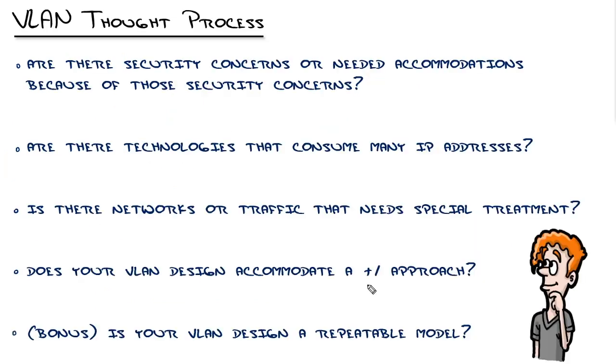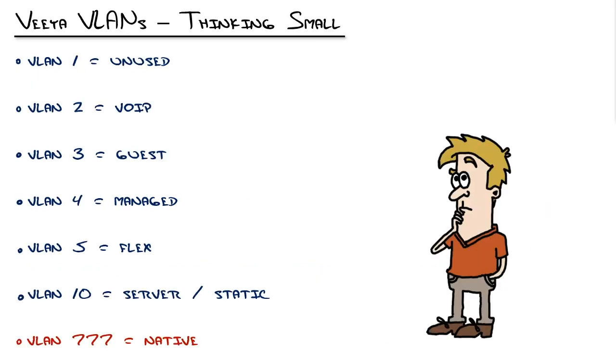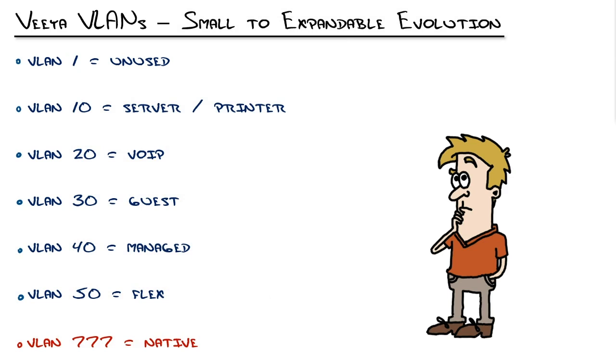You don't give yourself what I would call a plus one approach. What does plus one mean? It means we take this small thinking VLAN design and expand it to something like this, a really simple change. But look at those numbers. What do you think we can now do? Think about it. We can add one, right?